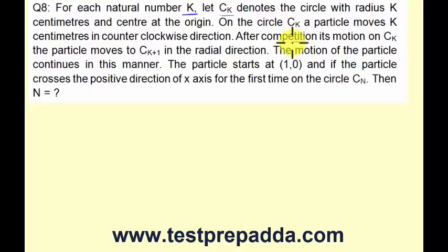On the circle CK, a particle moves K centimeters in counter-clockwise direction. After completing its motion on CK, the particle moves to CK plus 1 in the radial direction. The motion of the particle continues in this manner. The particle starts at (1,0), and if the particle crosses the positive direction of x-axis for the first time on the circle CN, then the value of n is?